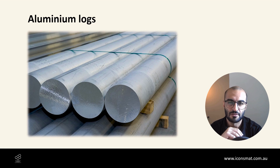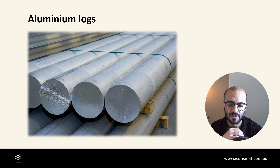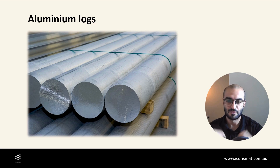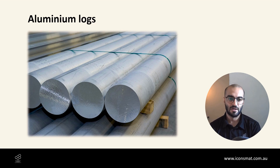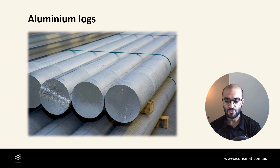In Australia we have something around 5 to 6 Aluminium Smelters, where Bauxite, after some sort of refinery process, is melted down and becomes an Aluminium Log. That Aluminium Log then goes through a machine that is called a Press.